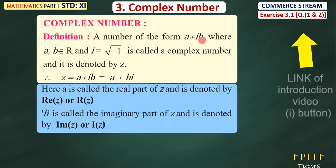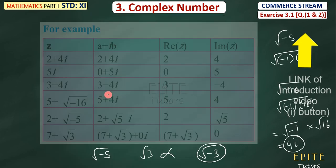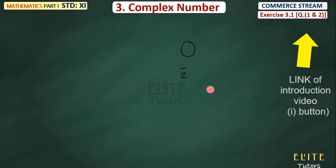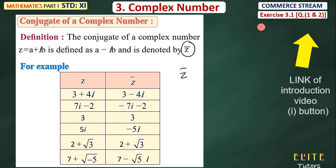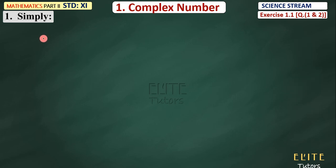Please watch the 22-minute introduction video across the entire section. We have covered all those different things there. After that, we will start the exercise section. So please, if you have seen that approximately 22-minute introduction video, you will understand what a complex number is, which is called an imaginary number, which is called the root of minus one, and what is the value of i².